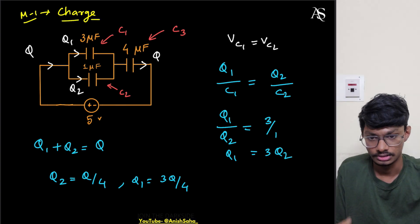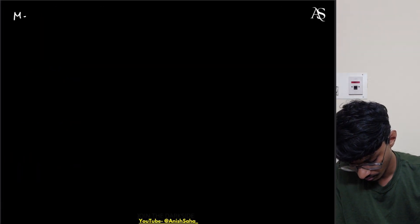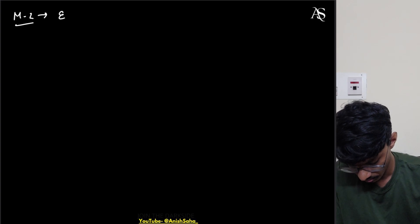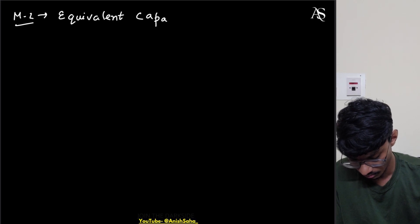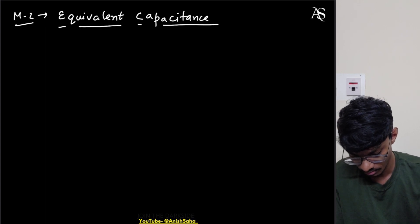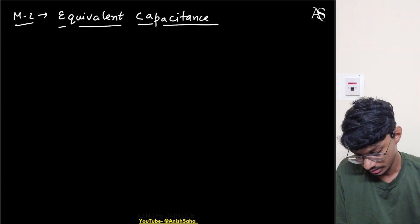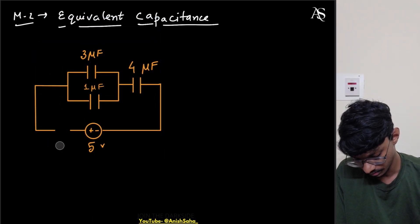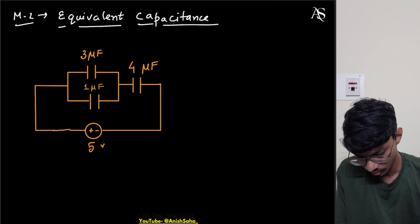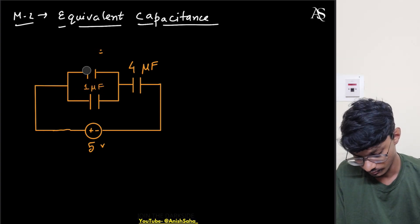Now for Method 2, we use equivalent capacitance. Let me take the circuit again. What I'll do this time is simply convert the circuit into equivalent capacitance. C1 and C2 are in parallel — that's 3 and 1 — so the parallel combination becomes 4 microfarads.